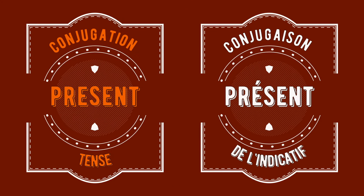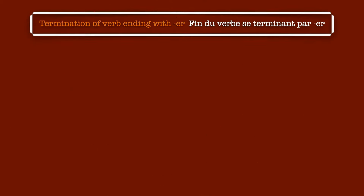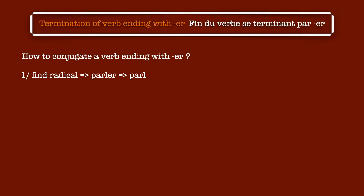But for today, the main point is to teach you how to conjugate verbs ending by -er, and this is what we are going to do right now. How to conjugate a verb ending with -er? There are two steps to understand in order to conjugate a verb, and the first one is to find the radical of the verb. We can see an example with the verb 'speak' in English. What we do in order to find the radical is that we remove the termination -er of the verb.